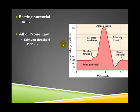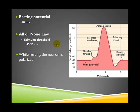We call this the all-or-none law: once you cross stimulus threshold, that neuron is going to fire and there's nothing you can do to stop it. When we say the neuron is resting, we say it is polarized, meaning the charge of the neuron is different than the charge of the fluid outside. When a neuron actually fires — when it's experiencing an action potential — it changes its charge all the way up to positive 30 millivolts, and we say it depolarizes during an action potential.